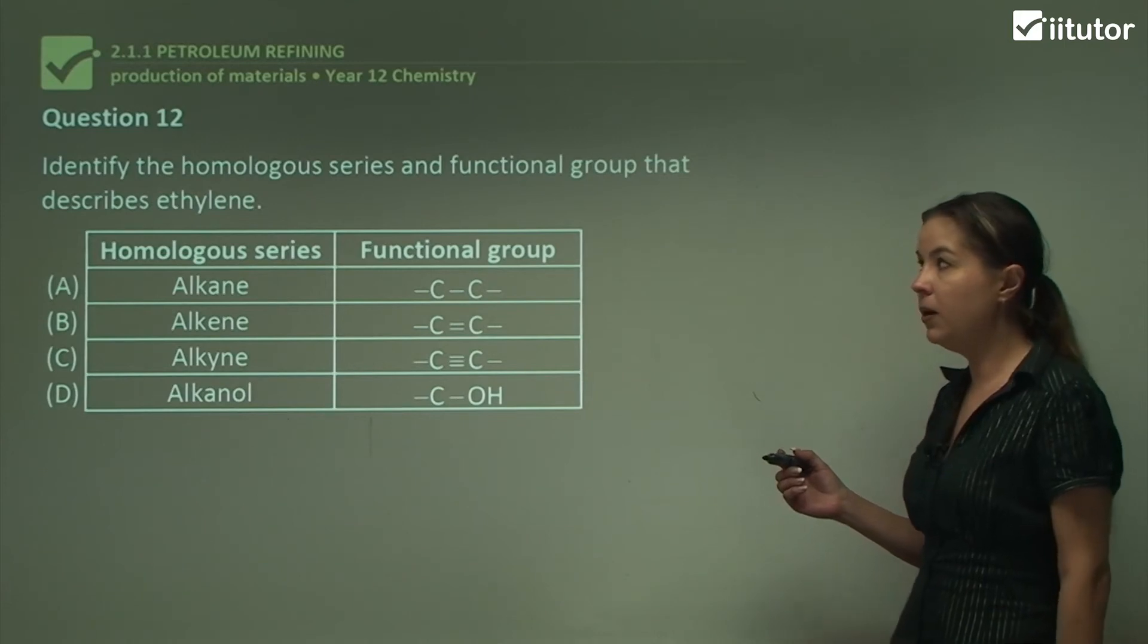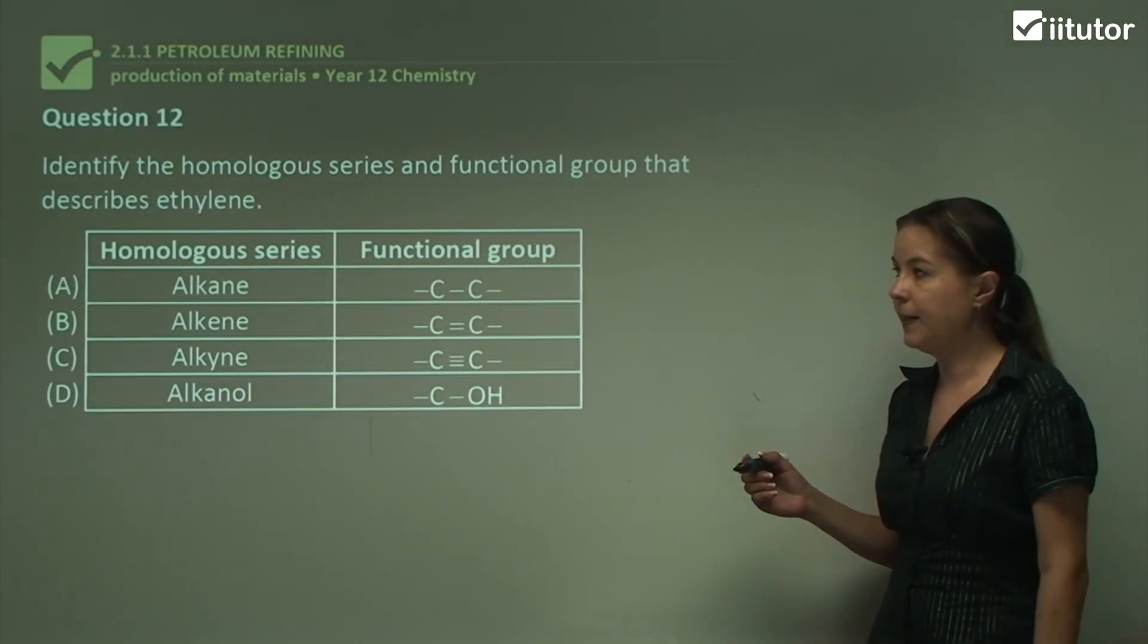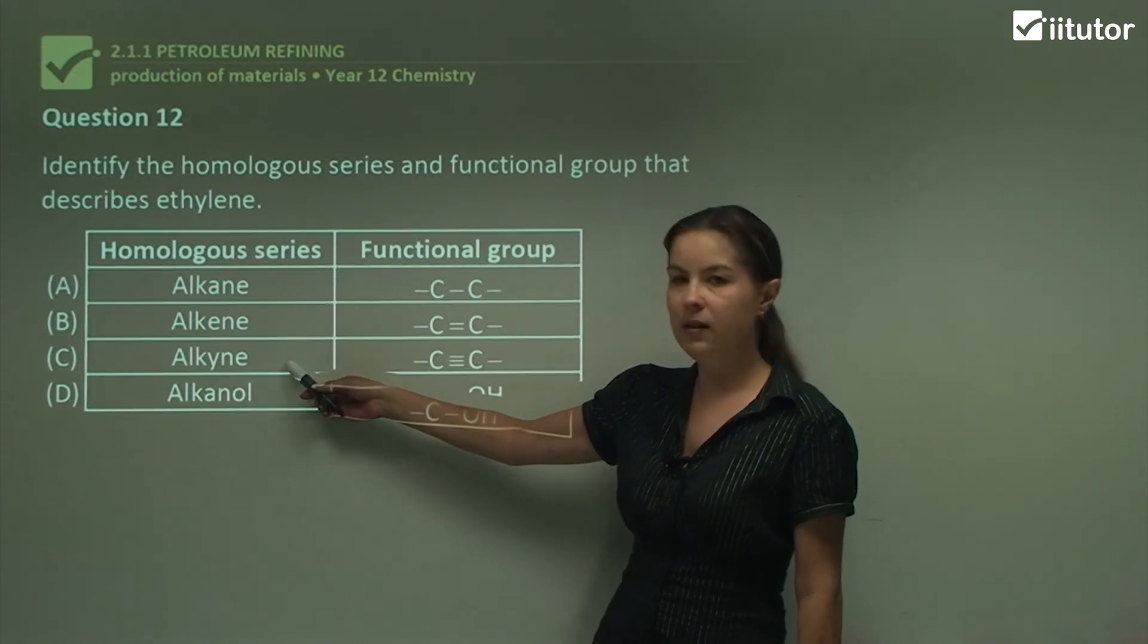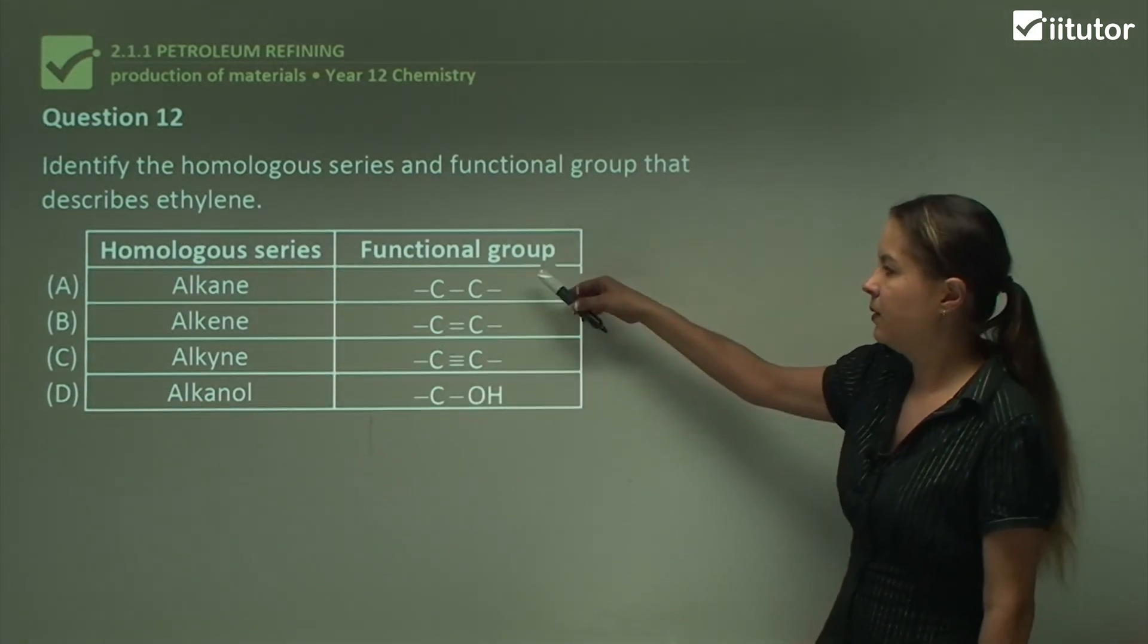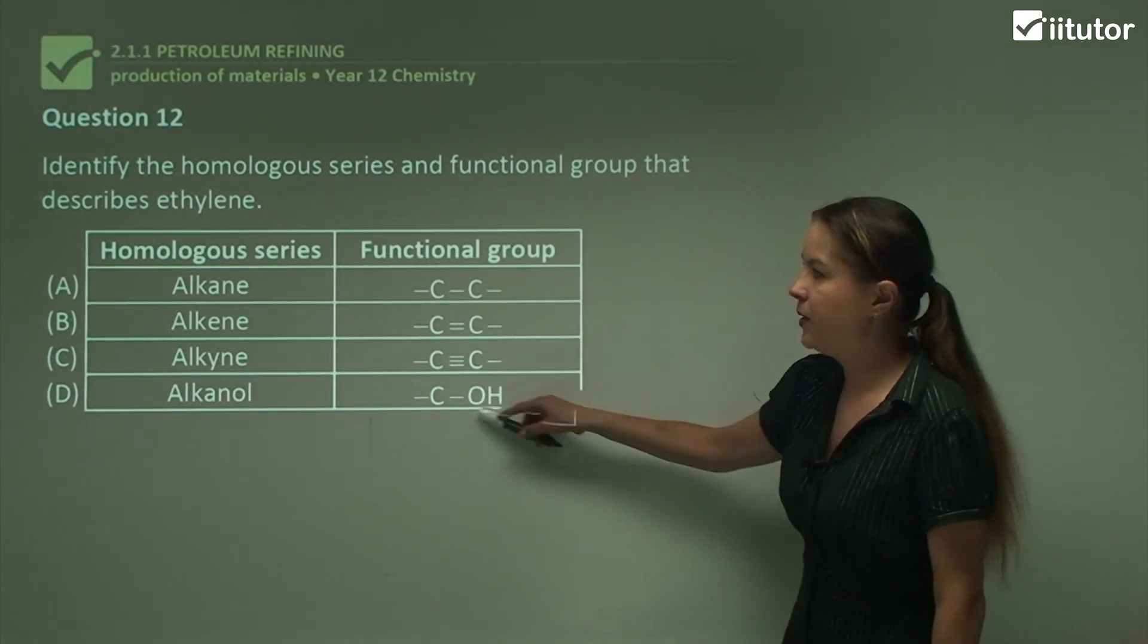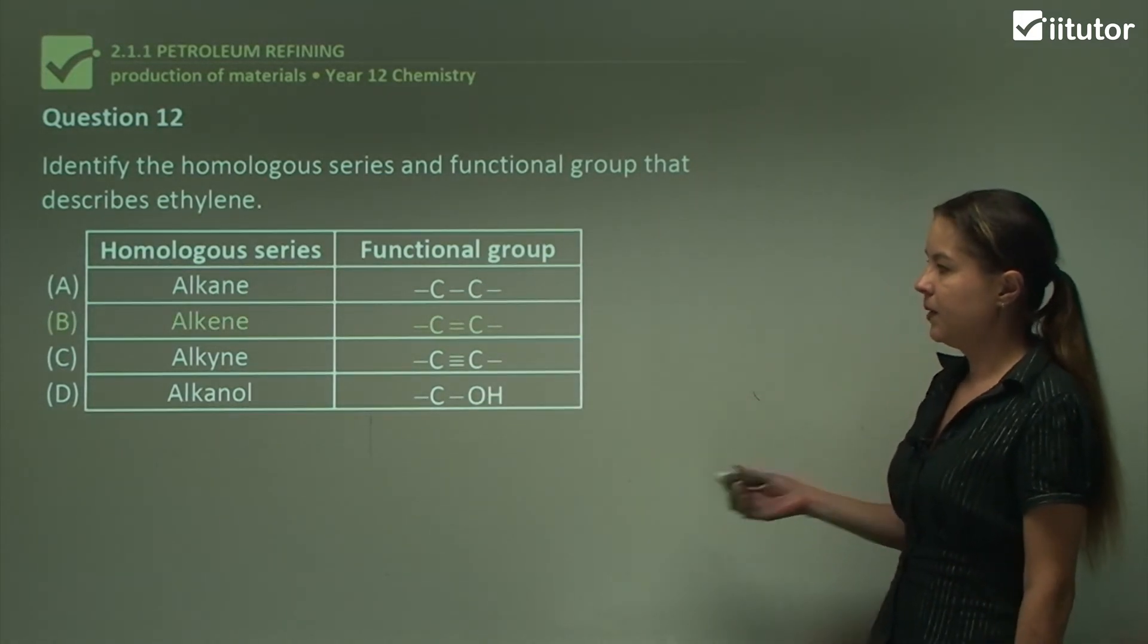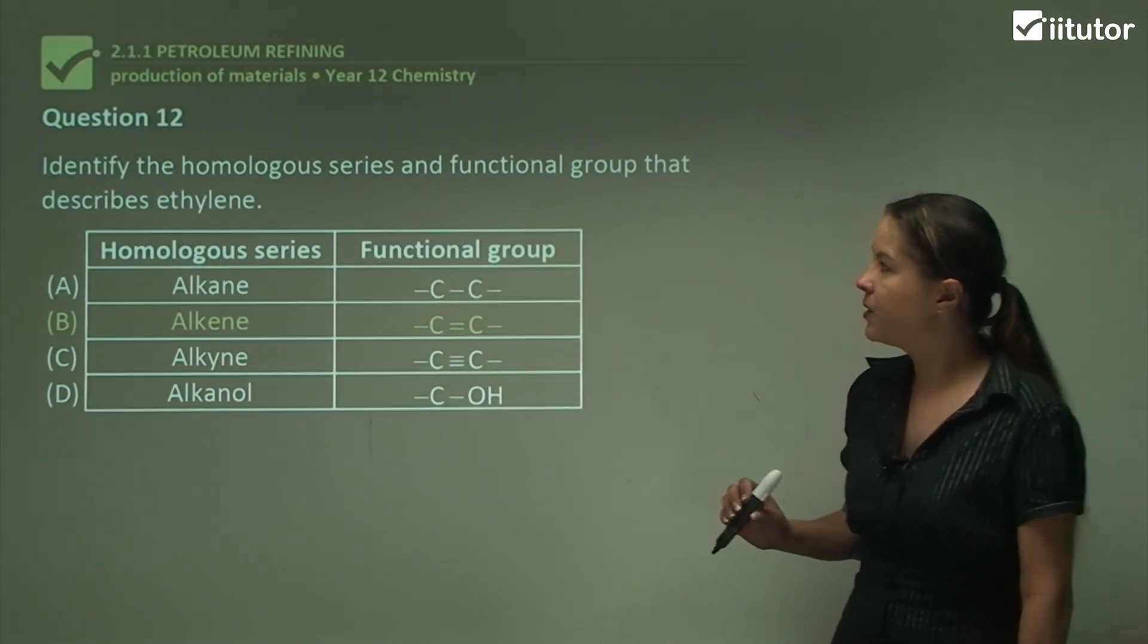Question 12 identified the homologous series and functional group that describes ethylene. You've been given some choices here. This is the homologous series: alkane, alkene, alkyne, and alkanol. And these are their functional groups. A single bond, a double bond, a triple bond, and an OH group. So where does ethylene fit into these groups? Of course, it has a double bond, so it's an alkene. So that's our answer for this question.